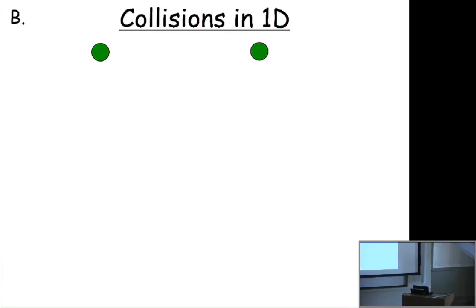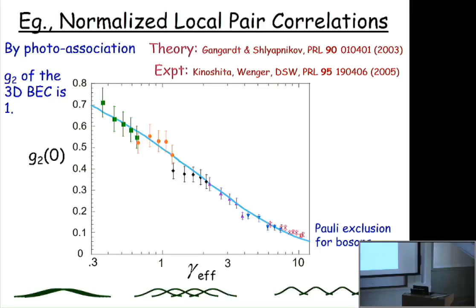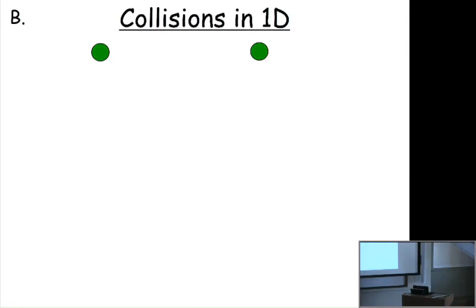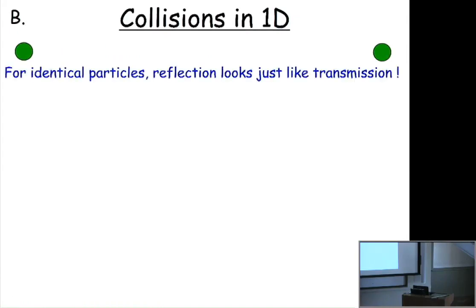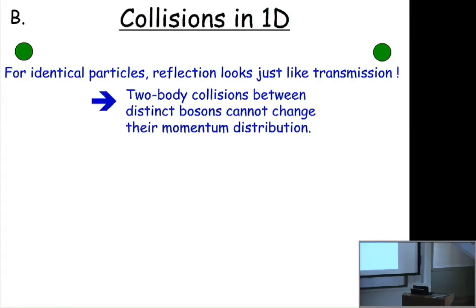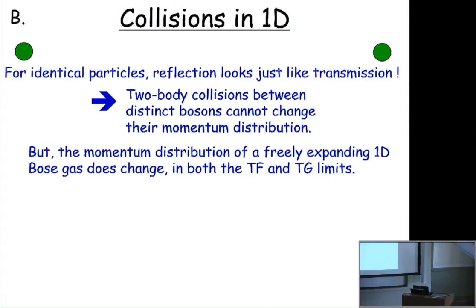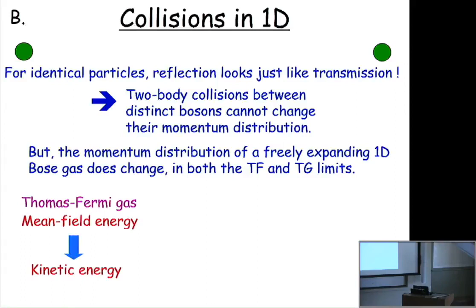Taking the gas out of equilibrium: the first thing to consider is just two particles colliding in one dimension. If they're identical particles, you can't tell whether they reflect or pass through each other, and those are the only two options that conserve energy and momentum. So with just two-body collisions, you can't change the momentum distribution. In an interacting gas it's more complicated — for a Tonks-Girardeau gas in the strong coupling limit, what starts as a bosonic momentum distribution with a peak in the middle evolves as it expands into something that looks fermionic. But this is an integrable process, nothing like thermalization.